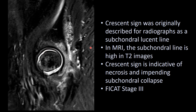The crescent sign is indicative of very advanced avascular necrosis, FICAT stage 3, and is impending subchondral collapse. As you can imagine with this high T2 linear abnormality underneath the subchondral plate, it's easy to understand that the subchondral plate can collapse as there is no structural support underneath it.